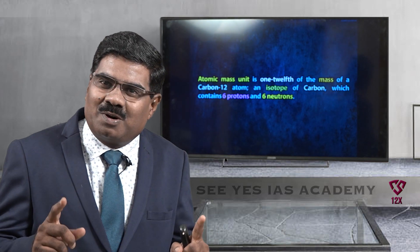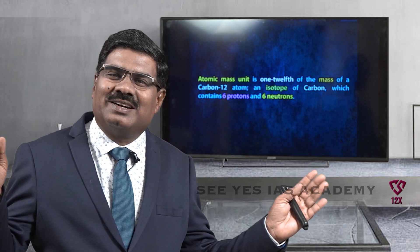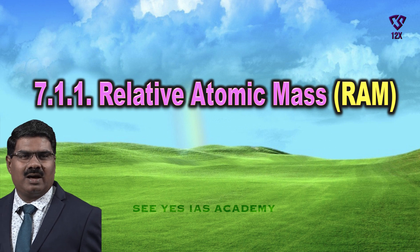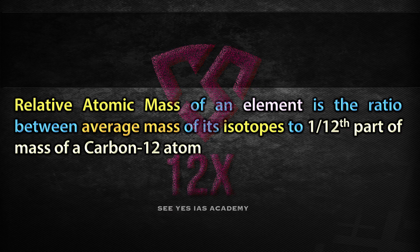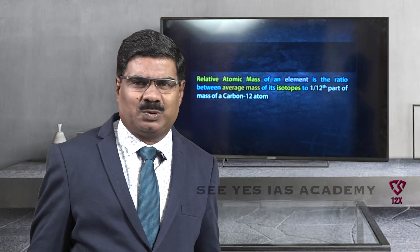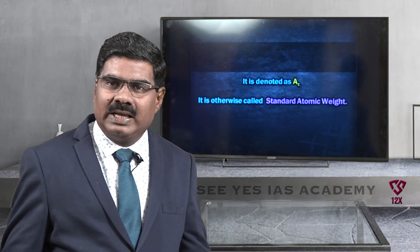Atomic mass unit is 1 twelfth of the mass of a carbon-12 atom, an isotope of carbon which contains 6 protons and 6 neutrons. Relative atomic mass, R.A.M., of an element is the ratio between the average mass of its isotopes to 1 twelfth part of the mass of a carbon-12 atom. It is denoted by AR.